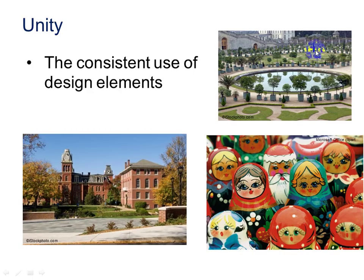How is unity achieved in this landscape design? You should notice the repetition of color — all of the plants are green, the grass is green, the planters are green — and the same types of plants. We have a lot of trees, a lot of shrubs. And even though it seems a little bit random and spontaneous, the curved paths — since they're repeated on both sections of the pond — also show unity in this design.